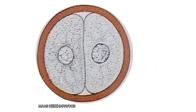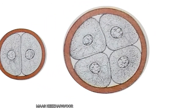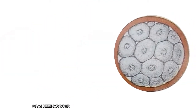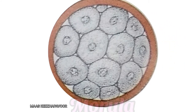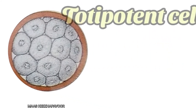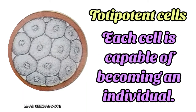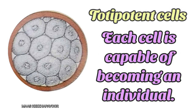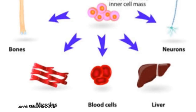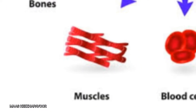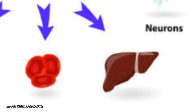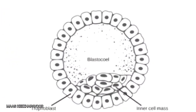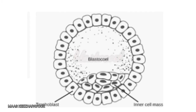The zygote starts multiplying by mitotic cell division. This is called cleavage. When it reaches the 16-cell stage, it looks like a mulberry, called morula. All these 16 cells are totipotent cells — that is, each cell is capable of becoming an individual. After further multiplication, the cells are differentiated into multipotent cells; that is, each cell can transform into any kind of cell.